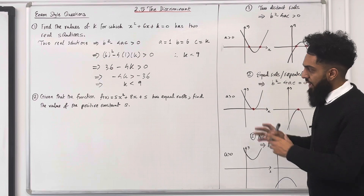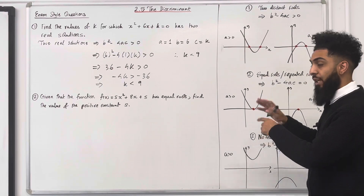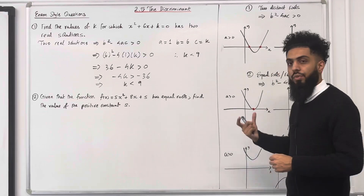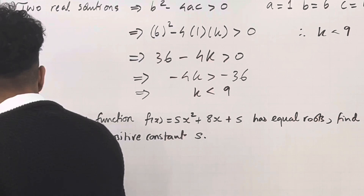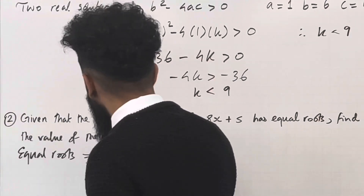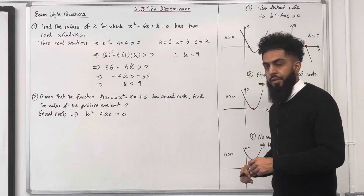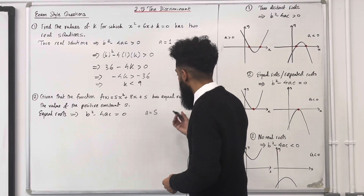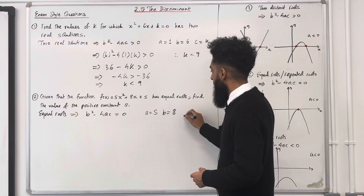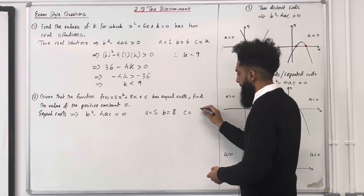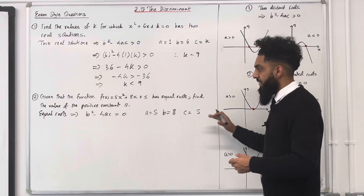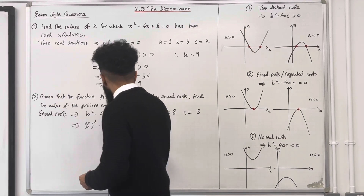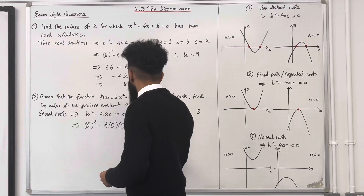Question 2: given that the function f of x equals sx squared plus 8x plus s has equal roots, find the value of the positive constant s. Equal roots implies that b squared minus 4ac is equal to 0. Reading off: a is s, b is 8, and c is s. Substituting: 8 squared minus 4 times s times s equals 0.